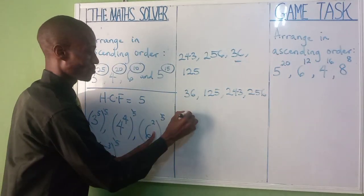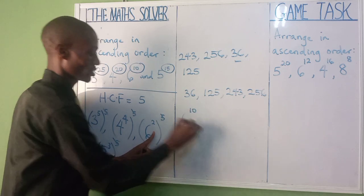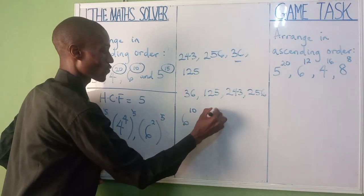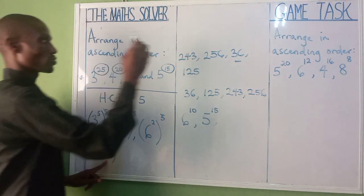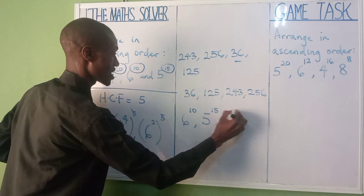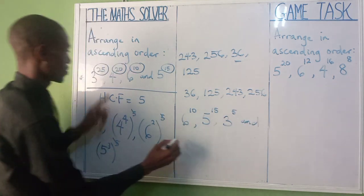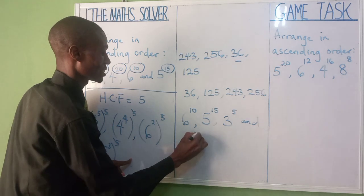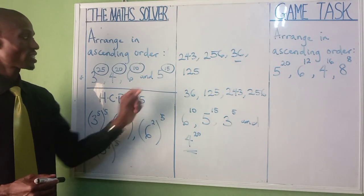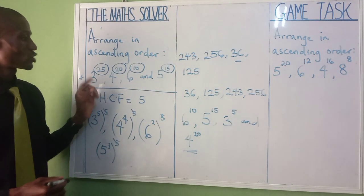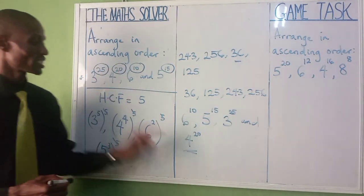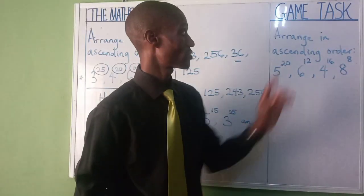So mapping back to the original expressions: six raised to the power of ten is the smallest, followed by five raised to the power of fifteen, then three raised to the power of twenty-five, and four raised to the power of twenty is the biggest. So the ascending order is: 6¹⁰ < 5¹⁵ < 3²⁵ < 4²⁰. Please try and solve this yourself and drop your answer in the comment section.